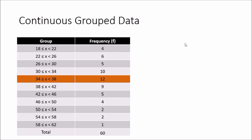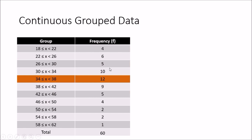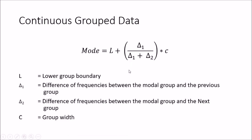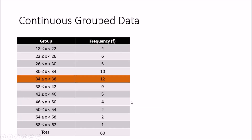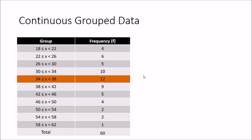To find the exact modal value, we use the equation: Mode = L + (Δ1 / (Δ1 + Δ2)) × C. Here, L is the lower group boundary — in this case 34. Δ1 is the difference in frequencies between the modal group and the previous group: 12 minus 10 equals 2. Δ2 is the difference between the modal group and the next group: 12 minus 9 equals 3. Note that you always subtract from the modal group value, so the answer is always positive. C is the group width.